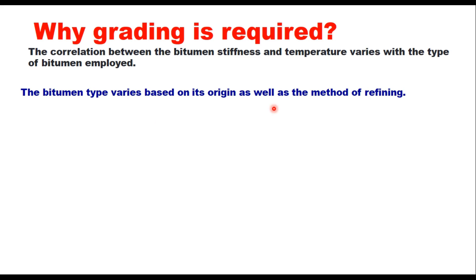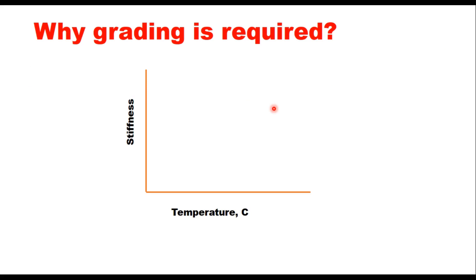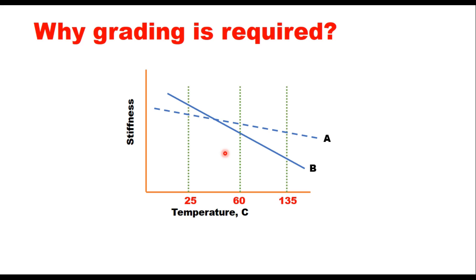Let us consider two samples of bitumen and plot their stiffness with temperature — bitumen A and bitumen B. As you can see, they have different relationships with temperature. At 25°C, bitumen B is stiffer than bitumen A, but this trend is reversed at 60°C or 135°C, and it depends upon the source of crude and the method of refining. Due to these variations, it is important to define a test temperature to determine the grade of bitumen. Stiffness is important at three temperatures: 25°C, 60°C, and 135°C.